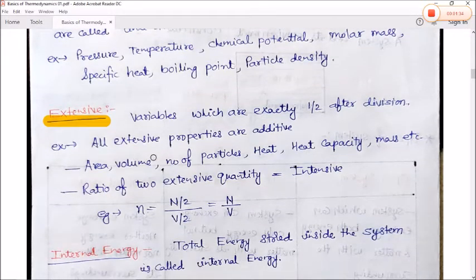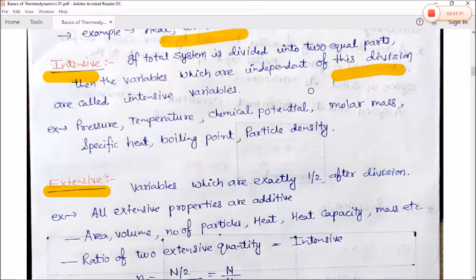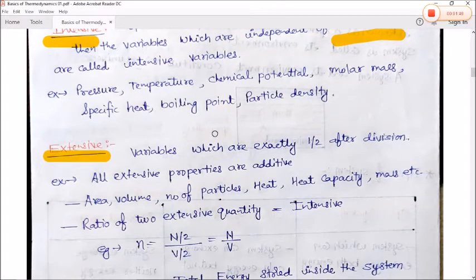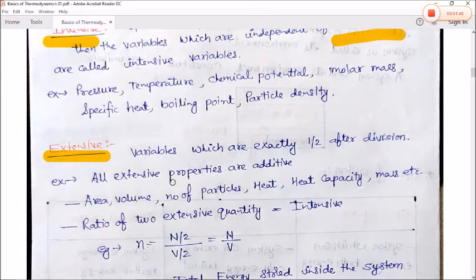Extensive property is just the opposite — since intensive properties do not depend on division, extensive properties obviously do depend on it. Variables which are exactly half after division are called extensive variables. All extensive properties are additive — meaning if you add two half extensive variables you get the total quantity.